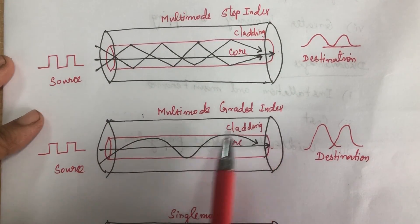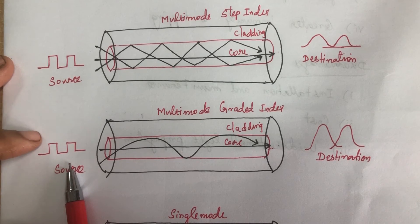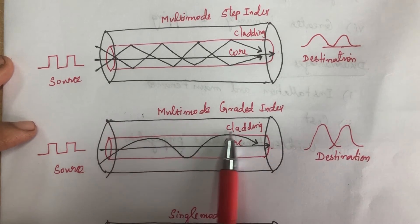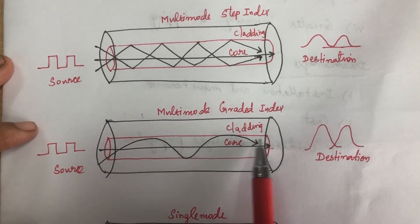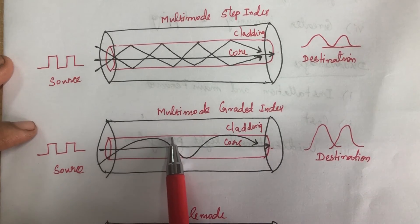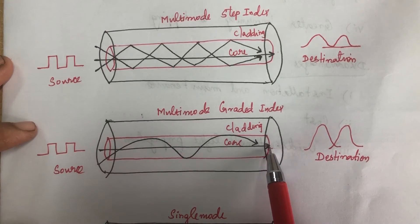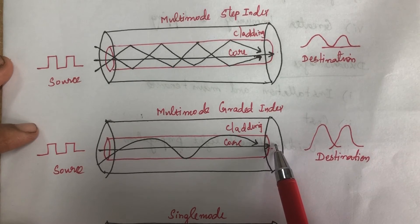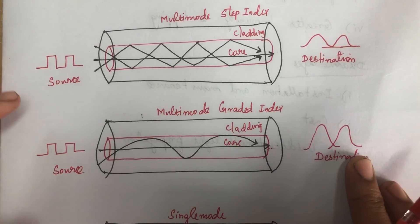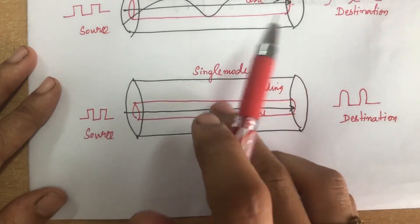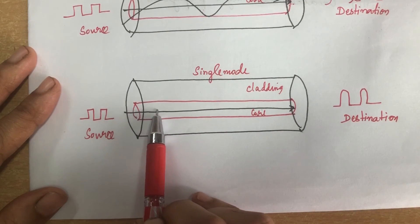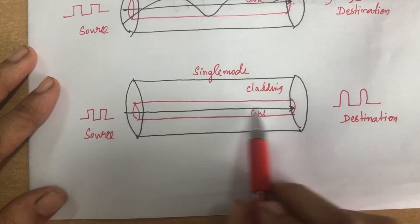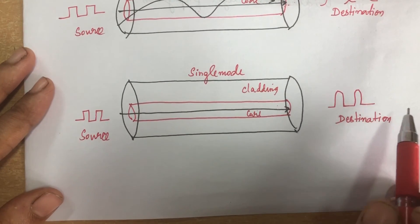In multi-mode graded index, multiple beams travel through the core but the density of the core is highest at the center and lower at the edges, so distortion is less at the edges. In single mode, only one beam of light is passed inside the core, and the radius of the core is smaller compared to the other two methods, resulting in the best output at the destination.